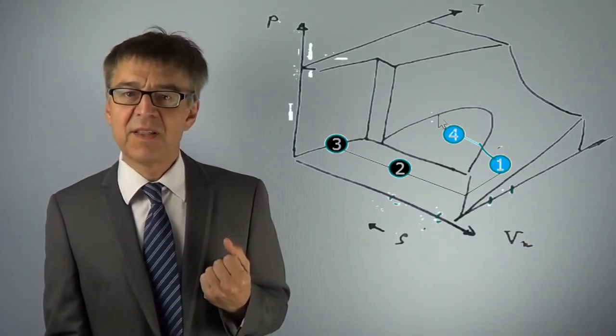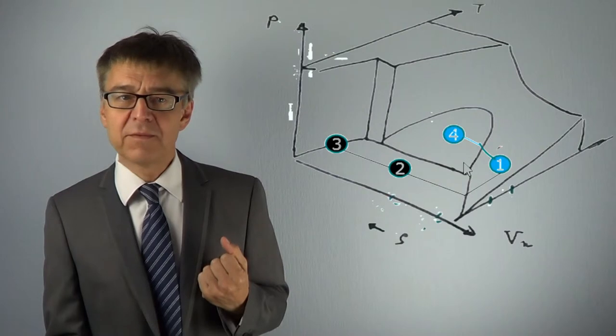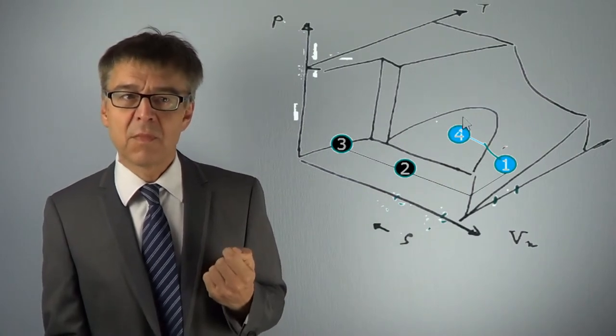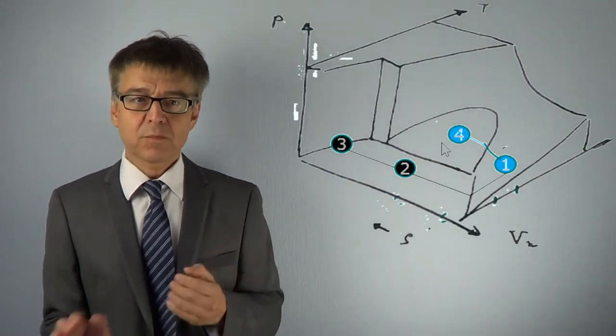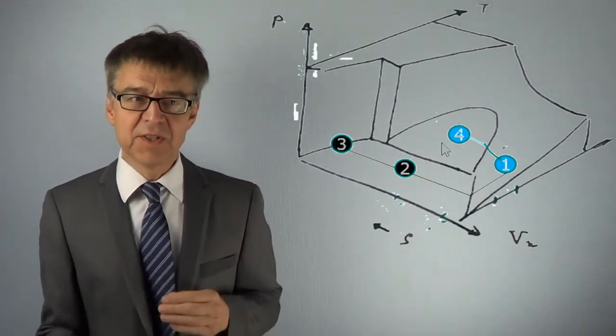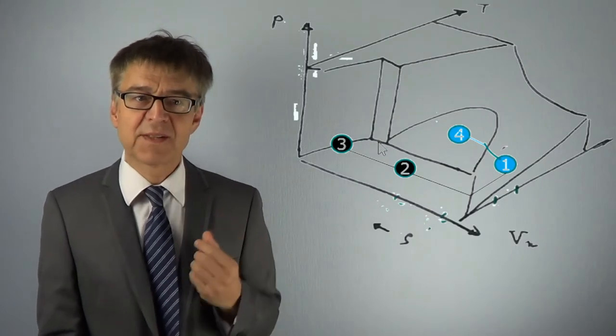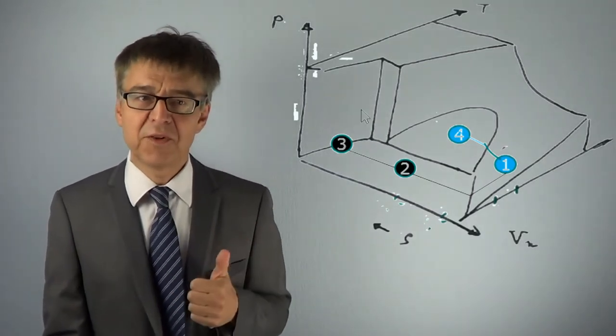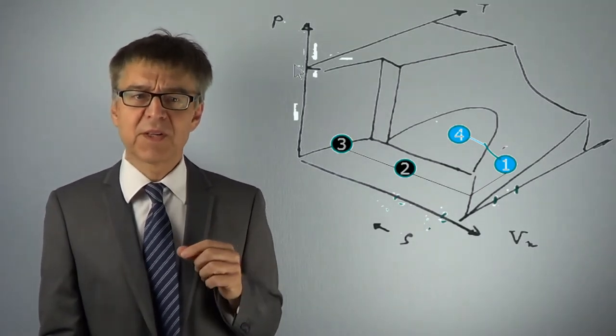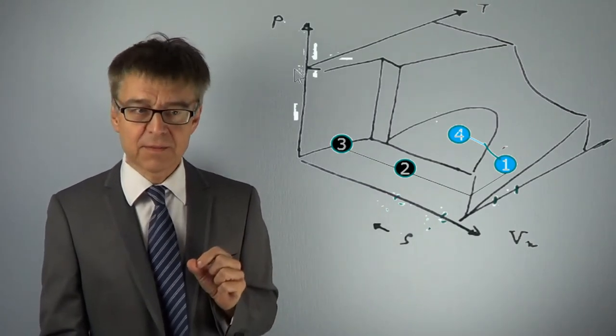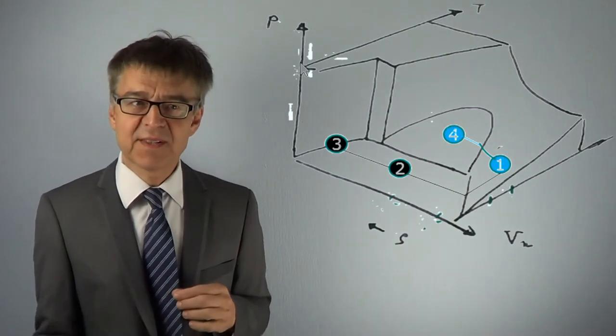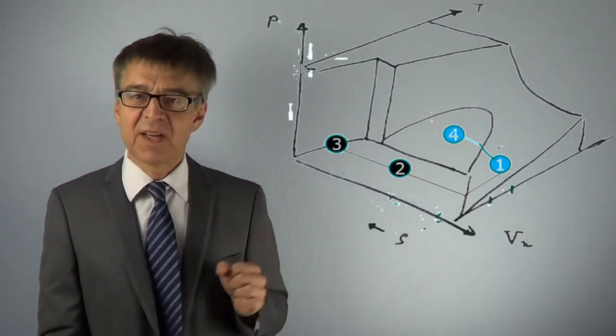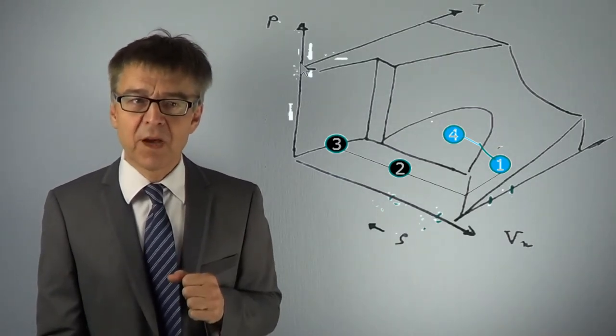Here you see another binodal curve, the boundary of the liquid gas region. In the heterogeneous regions, in which our system has only one degree of freedom, we can draw so-called tie lines. Tie lines are connection lines between two phases which coexist in equilibrium.